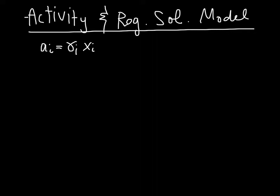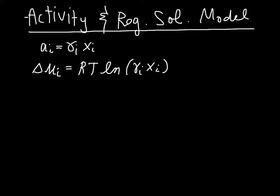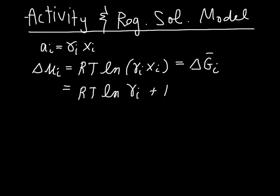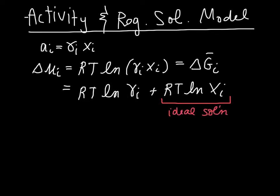We start with this expression for activity, and we can write the expression for the change in chemical potential as RT·ln of the activity term. This delta mu_I, we can also write as the delta partial molar Gibbs free energy of I. If we expand this, it becomes RT·ln(γ_I) plus RT·ln(X_I). This second term is basically the contribution from the ideal solution, and the first term quantifies the deviation from the ideal solution.